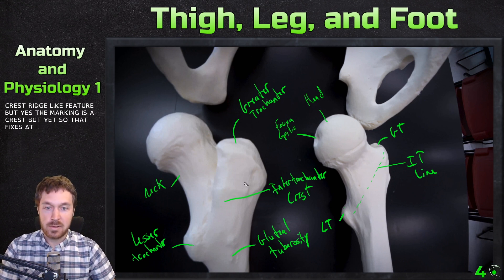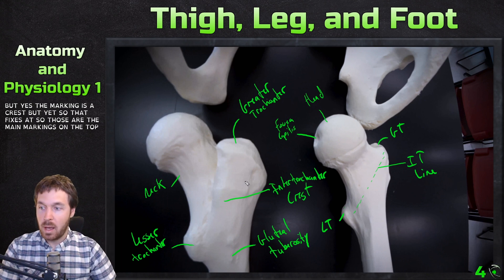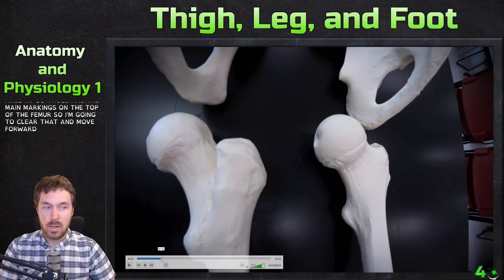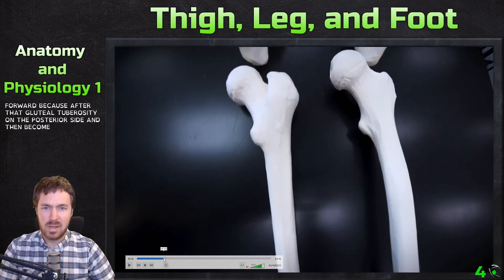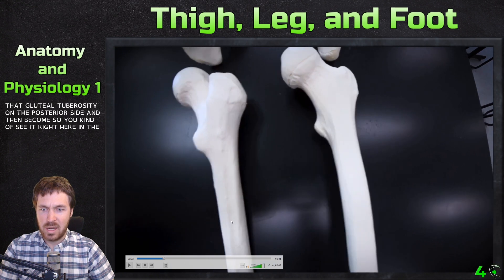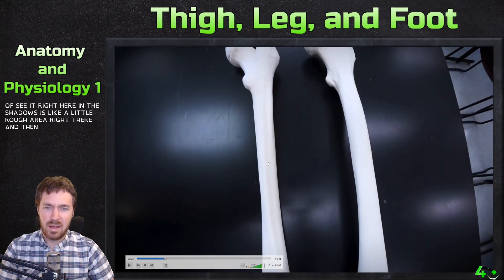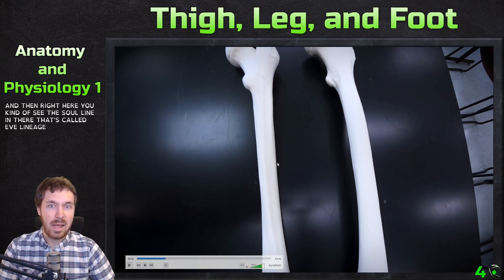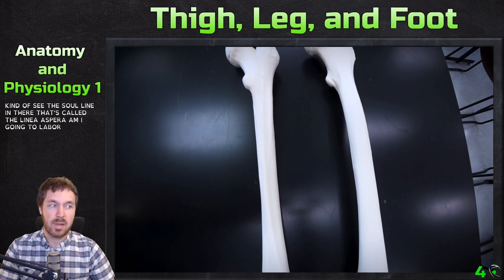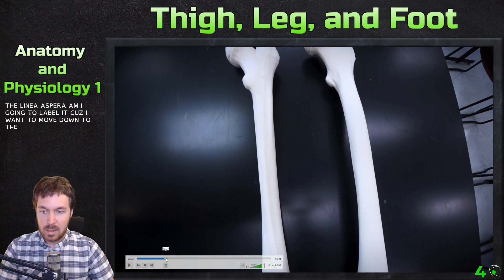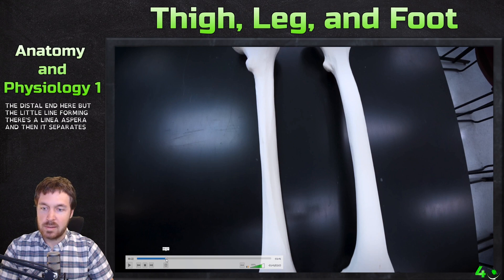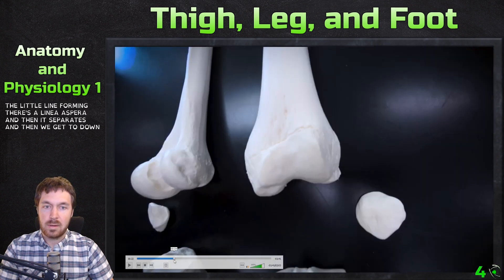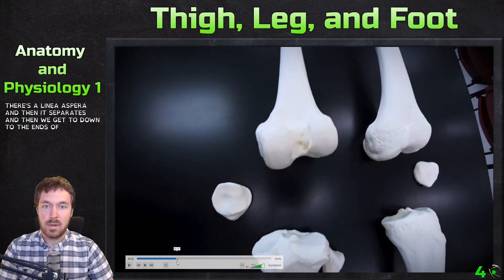After the gluteal tuberosity on the posterior side, there's a rough area that then becomes a little line — that's called the linea aspera. It runs down the posterior shaft of the femur, then separates as we get down to the distal end of the femur.